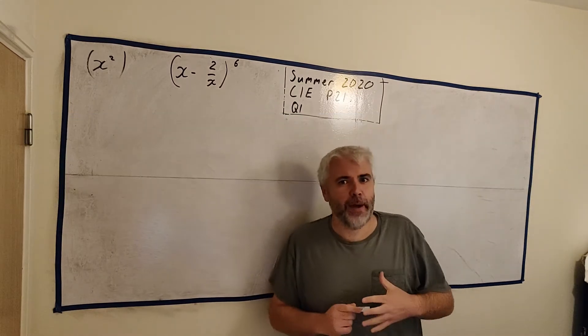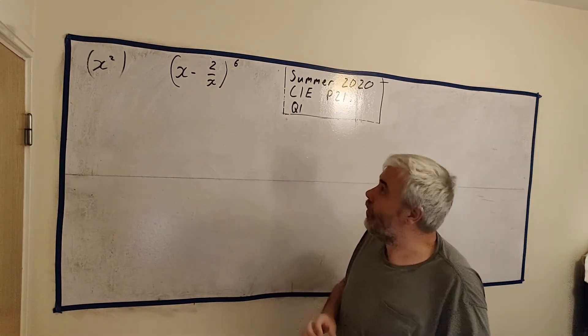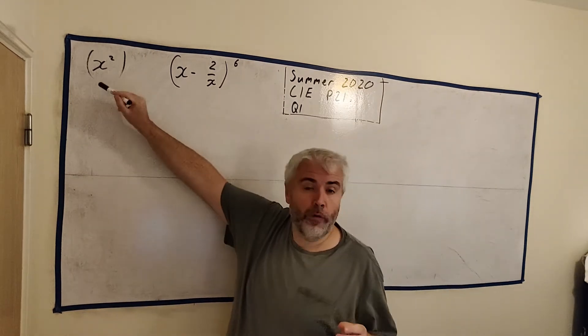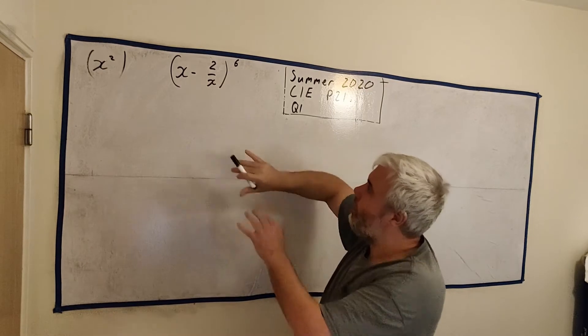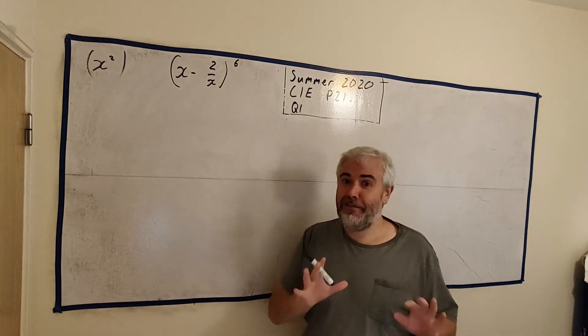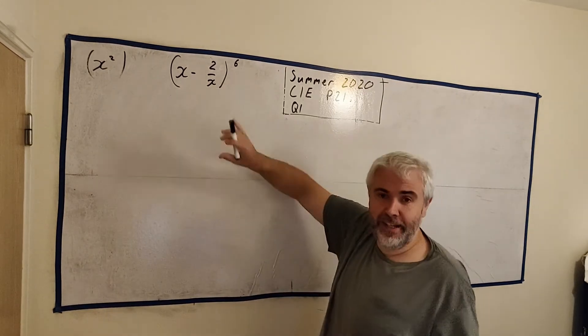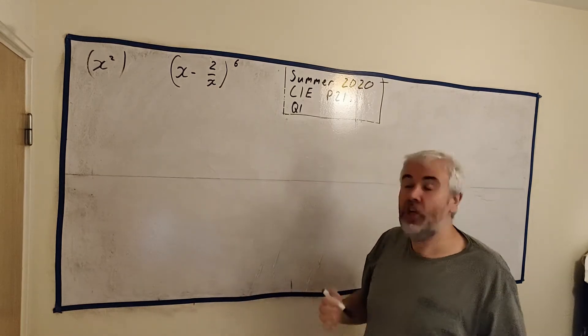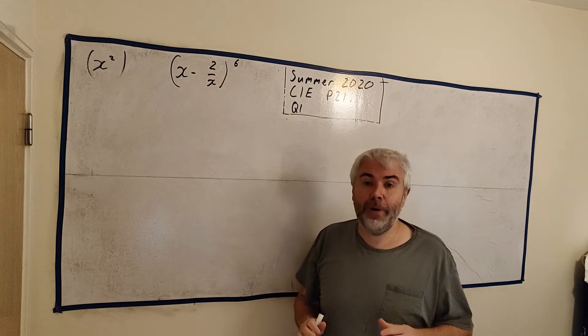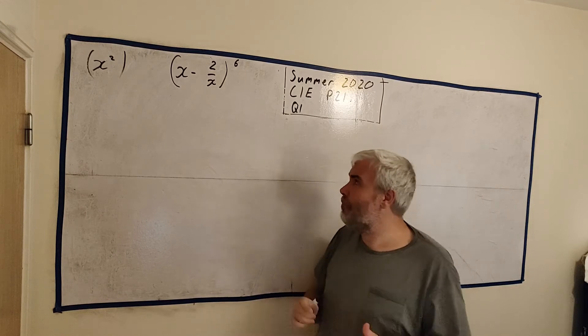Okay, this question's about the binomial expansion. They ask us to find the coefficient of x² in this expansion. Basically, they want to multiply this out. Now, I've seen students actually multiply this out. It would only take about 10 minutes, maybe a little less. Too long to get the two marks that are available in this question, so please don't do that.